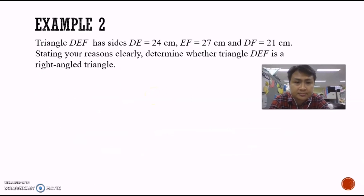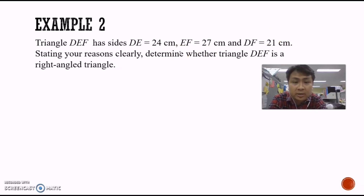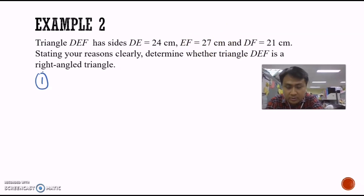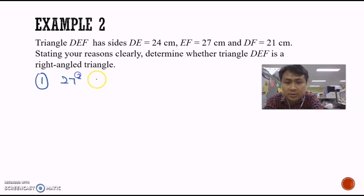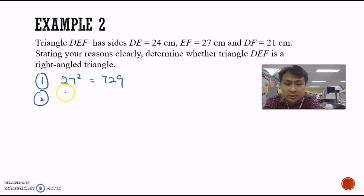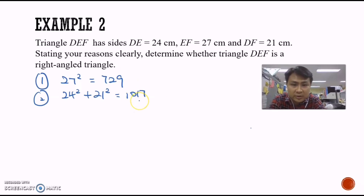Now let's take a look at the second example. We have triangle DEF with lengths 24 cm, 27 cm, and 21 cm. You are also supposed to determine whether or not the triangle is a right-angled triangle. First, we identify the longest length — that's 27. So we calculate 27 squared using a calculator, which gives 729. The second step is to calculate the sum of squares of the two shorter lengths: 24 squared plus 21 squared, which gives 1017. Making a comparison, the two values are not the same, so the triangle is not a right-angled triangle.